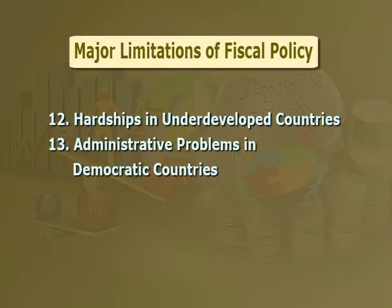In underdeveloped countries, the marginal propensity to consume is so high that most of the additional income is consumed and the marketable surplus is at the least. Number thirteen: administrative problems in democratic countries. In a democracy, fiscal policy measures must be a time-consuming process. Legislative actions, administrative tasks, and the executive process are often delayed, and the original estimates of revenue earnings and government expenditures often become irrelevant, causing a considerable erosion of effect with a large gap between expected and real attainment.